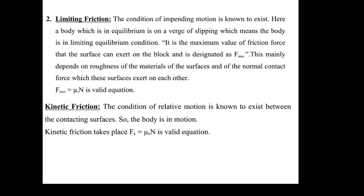Limiting friction is the condition of impending motion. When a body in equilibrium tends to move or slip, limiting friction is the maximum value of frictional force that the surface can exert on the block, designated as F_max. If the external force is higher than the limiting friction, kinetic friction occurs. If the external force is less than the limiting friction, static friction applies. Kinetic friction takes place when two bodies in contact are in relative motion.